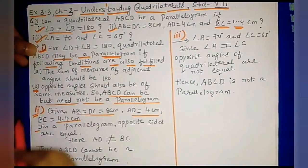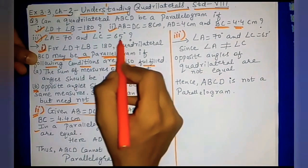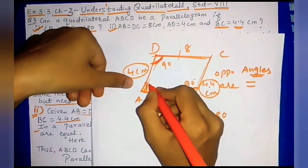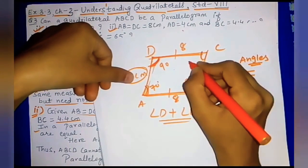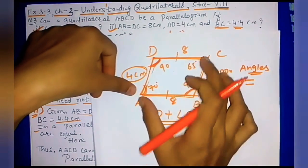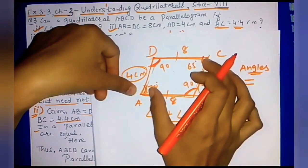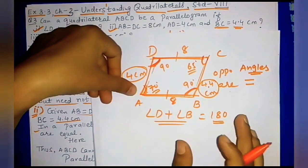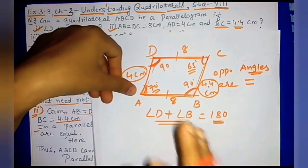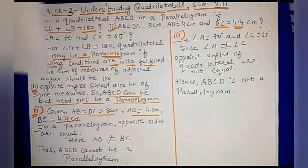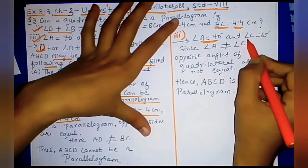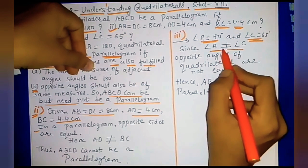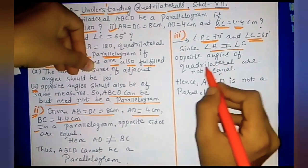For the third condition: angle A = 70° and angle C = 65°. Angle A and angle C are opposite angles. The property of a parallelogram states that opposite angles must be equal. But here angle A = 70° and angle C = 65°, which are different. Since the opposite angles are not equal, the property of a parallelogram is not satisfied.